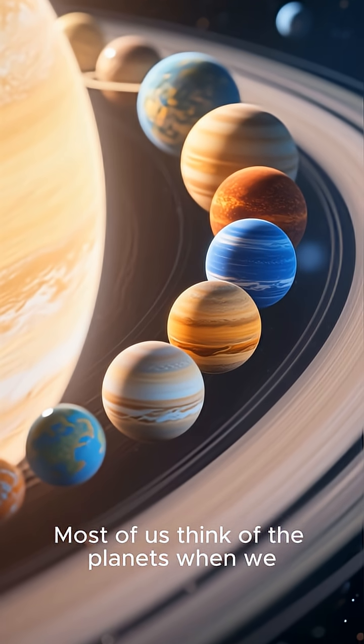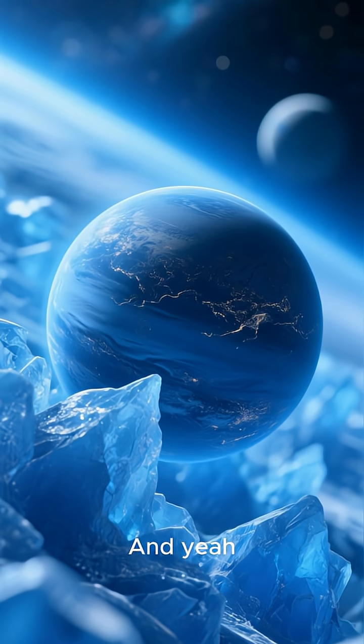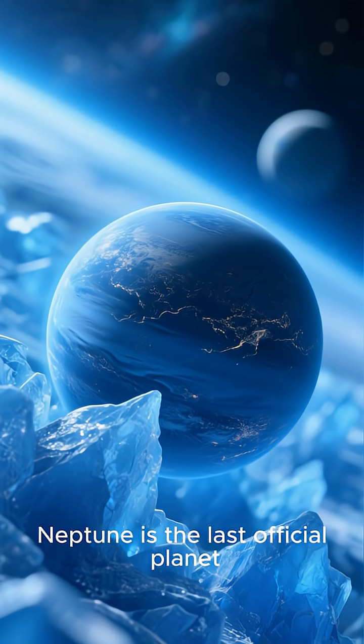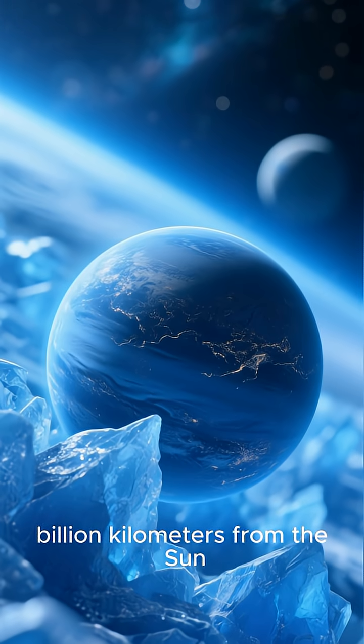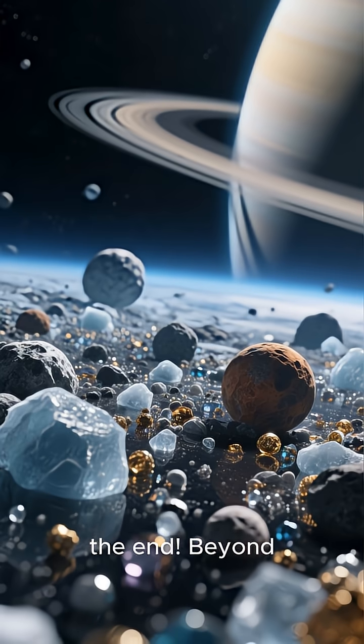Most of us think of the planets when we picture the solar system. And yeah, Neptune is the last official planet, about 4.5 billion kilometers from the sun. But that's just the beginning of the end.